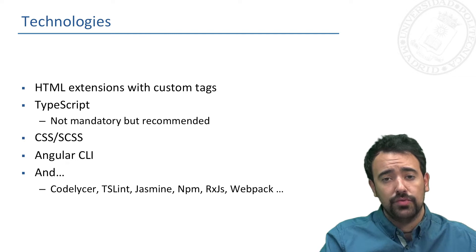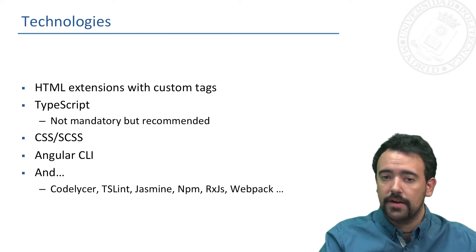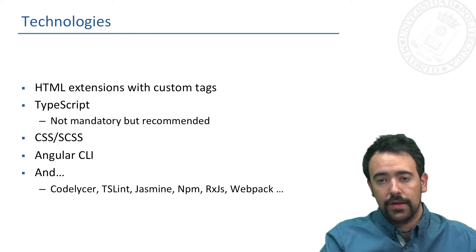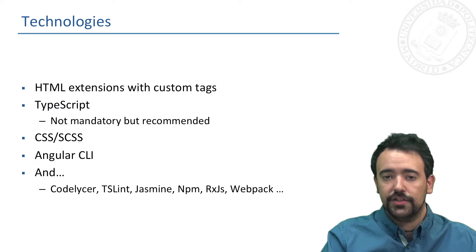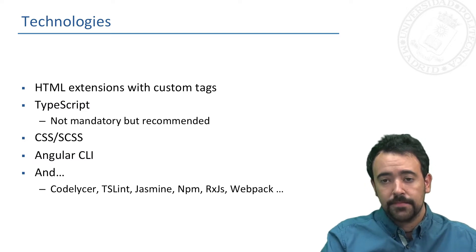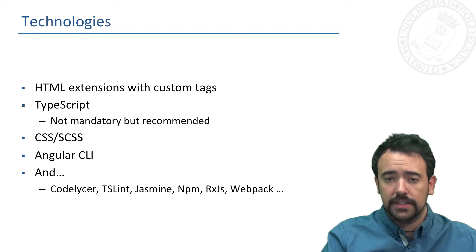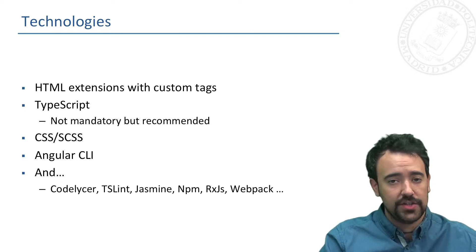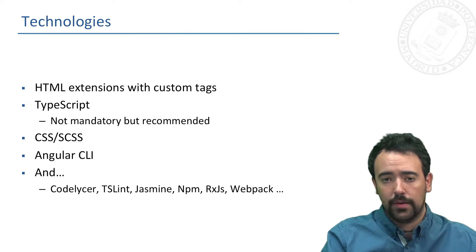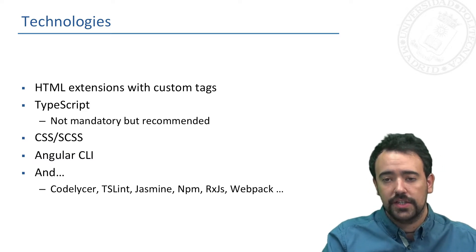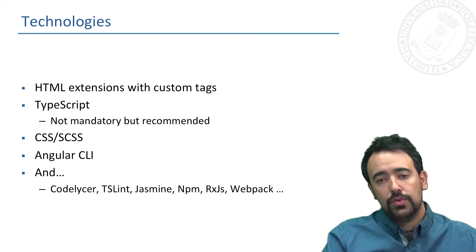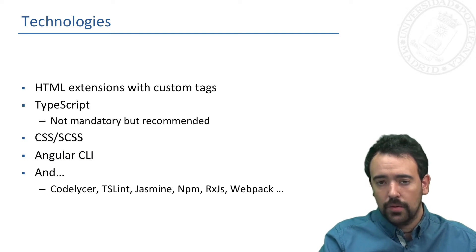The main technologies we need to know to start developing Angular applications are the following. For developing the views we will use HTML with several extensions that Angular adds. We will use TypeScript for scripting the logic of our application — this is not mandatory but is highly recommended, and in this MOOC we are going to use TypeScript. We can also use CSS and SCSS for styling our templates, and finally, thanks to the command line interface tools that Angular offers, we will be able to manage our application.